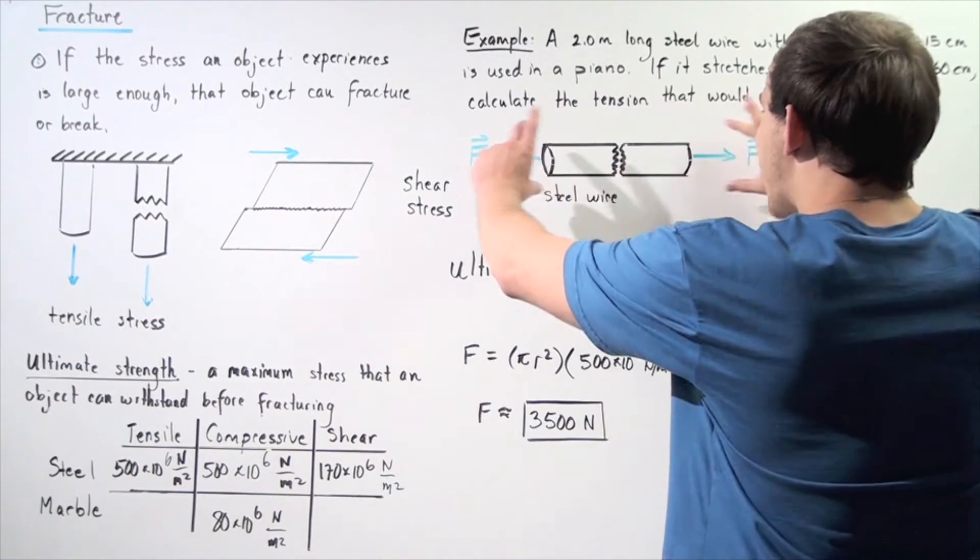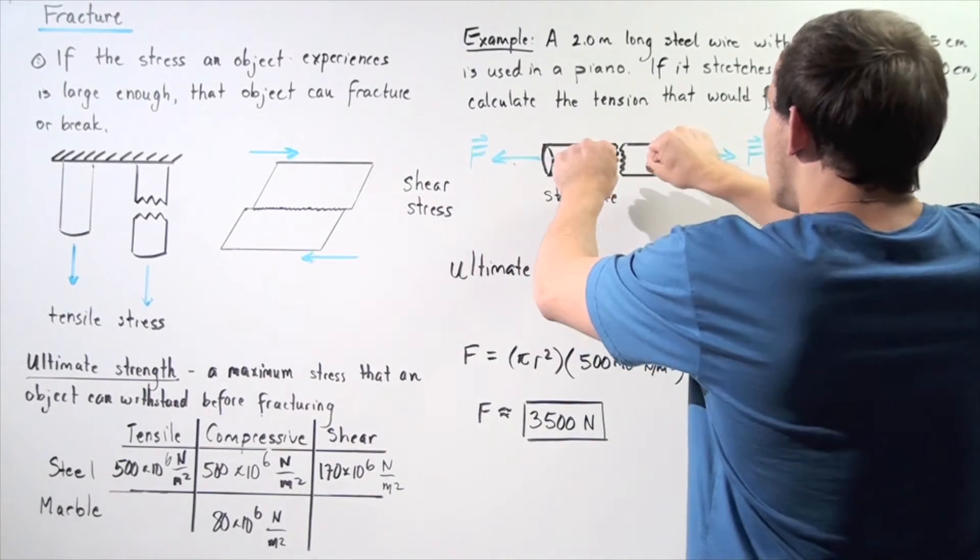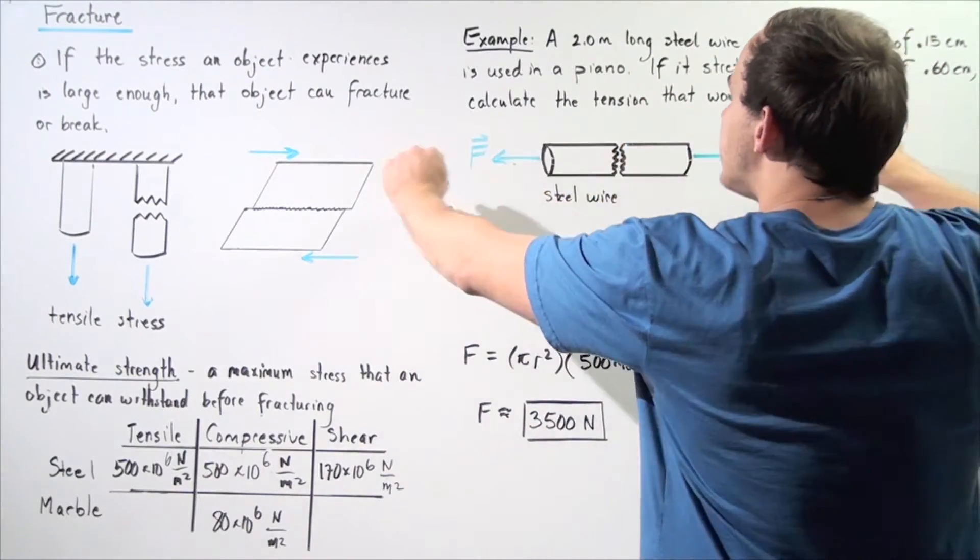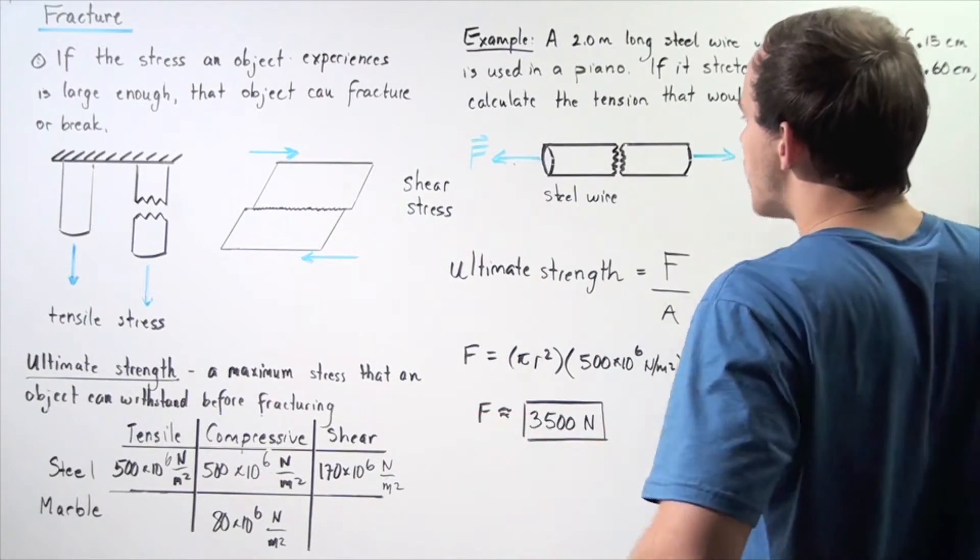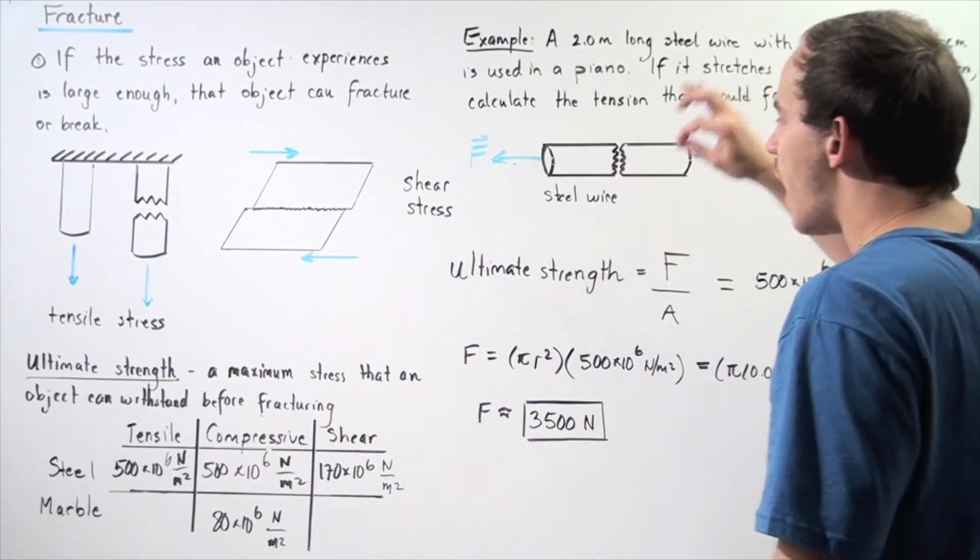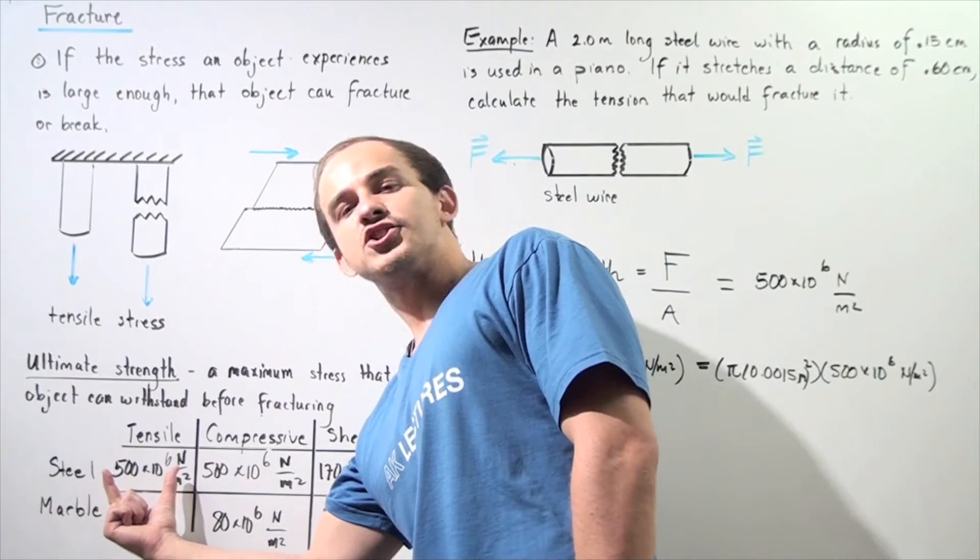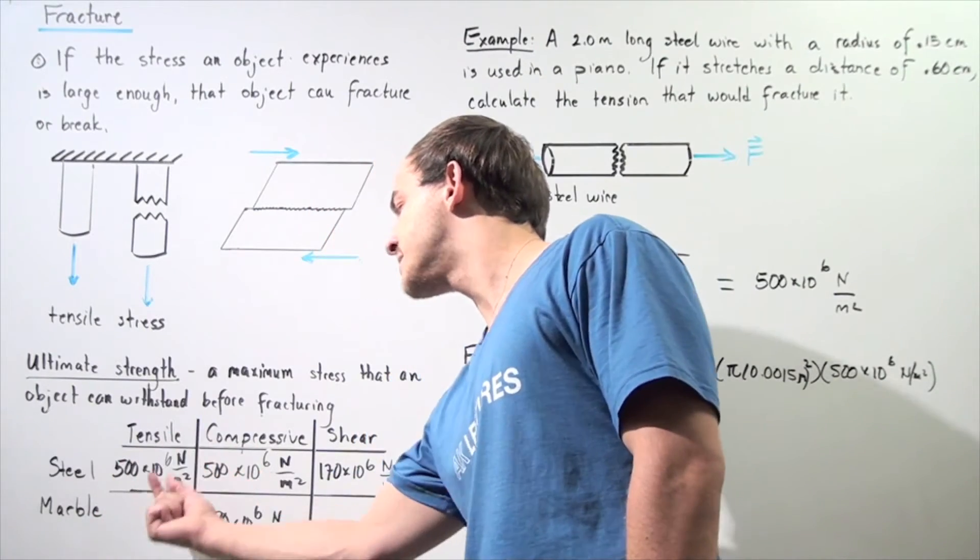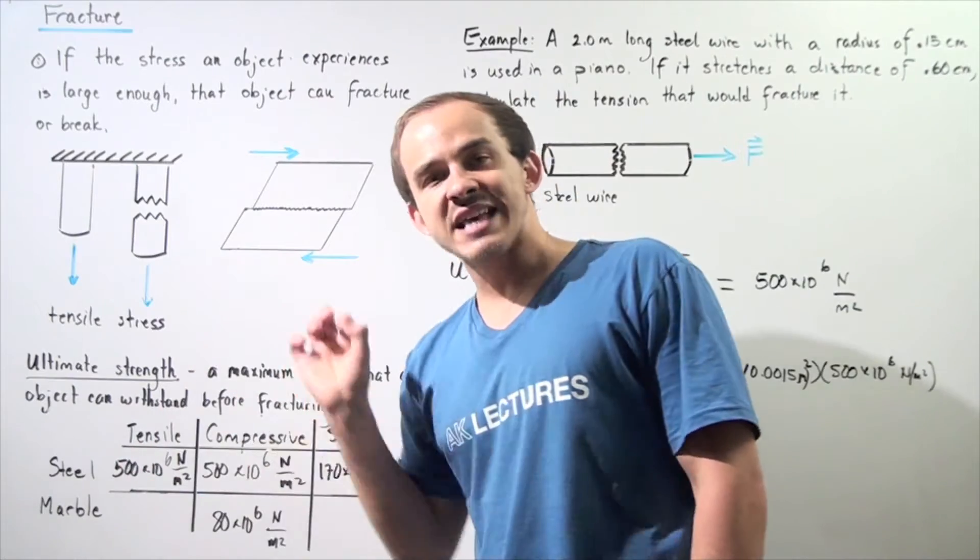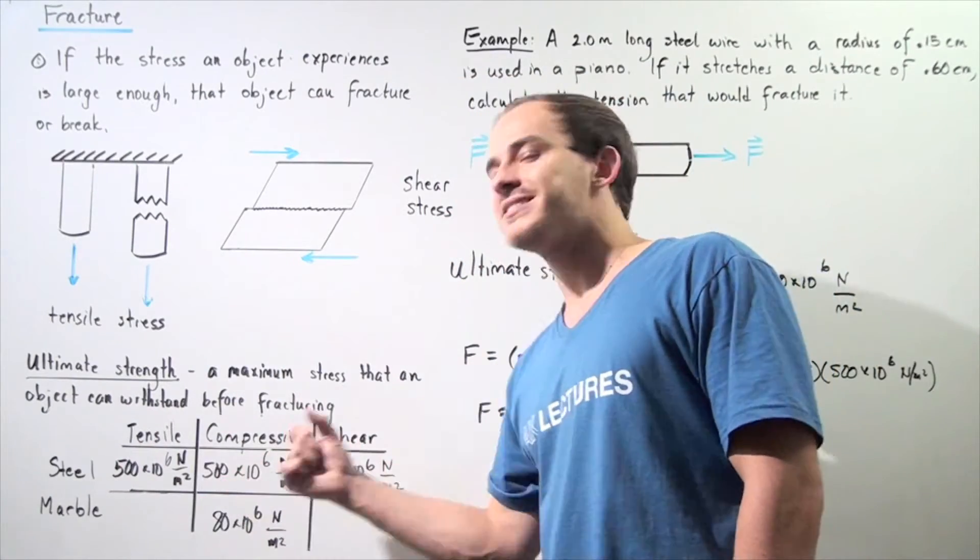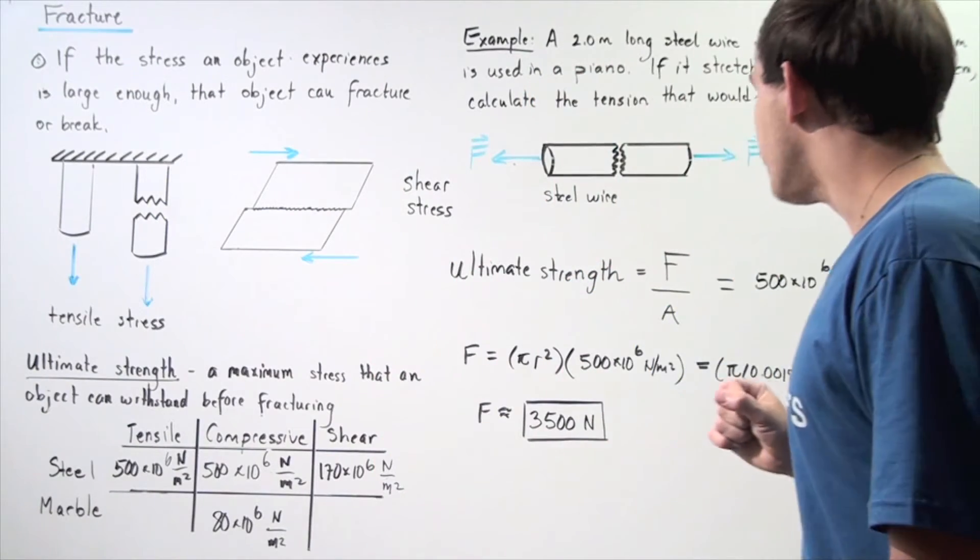So here we have our diagram. We have this steel wire and we're applying a tensile force on both sides. That basically means that the object, our steel wire, is under tensile strength. So we have to use this quantity, 500 times 10 to the 6 newtons per meter squared, which just happens to be the same value as the compressive. Now, that's not always the case.